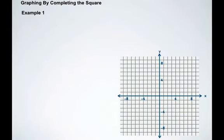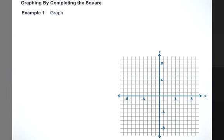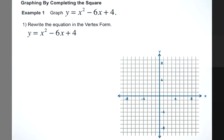So let's graph by completing the square. Example 1. We're going to graph y equals x squared minus 6x plus 4. Our job now is to rewrite the equation in vertex form. So we'll have to complete the square. We group the first two terms together. Now, what third term do we have to add to this binomial to make it a trinomial with a perfect square?